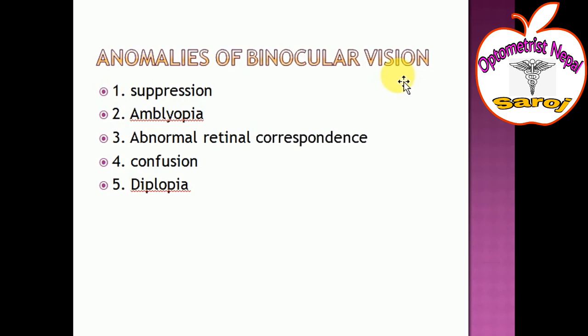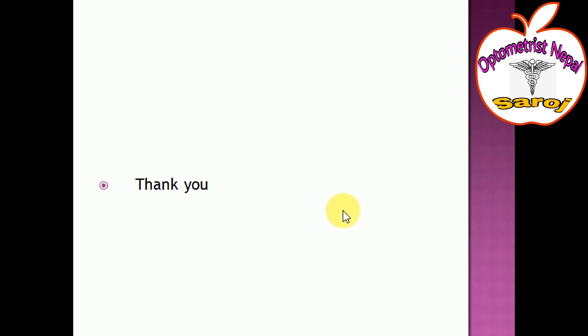Anomalies of binocular single vision: the first is suppression, the second is amblyopia, the third is abnormal retinal correspondence, the fourth is confusion, and the fifth is diplopia. Thank you for watching my video from first to last. If you are new to my channel, Optometrist Nepal, please like and subscribe, and press the bell icon to get notifications for new videos. Thank you all.